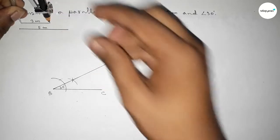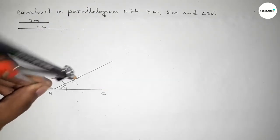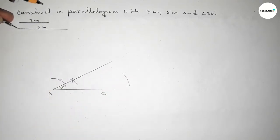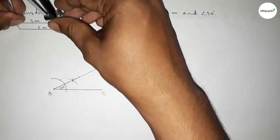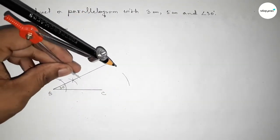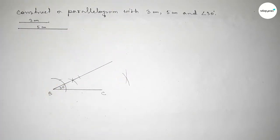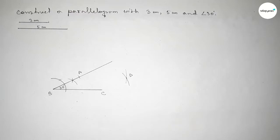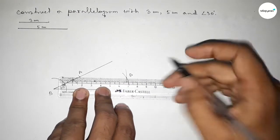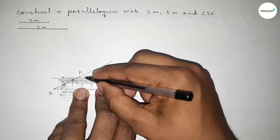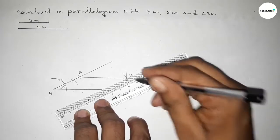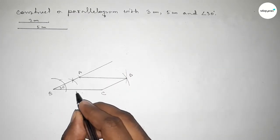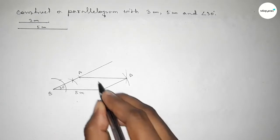Now taking the length 3 centimeters using the compass and putting the compass here and cutting. Then taking the length 5 centimeters and putting the compass and cutting here. So taking point A and point D — first joining A and D, then joining C and D. This side is 5 centimeters and the opposite side is also 5 centimeters.